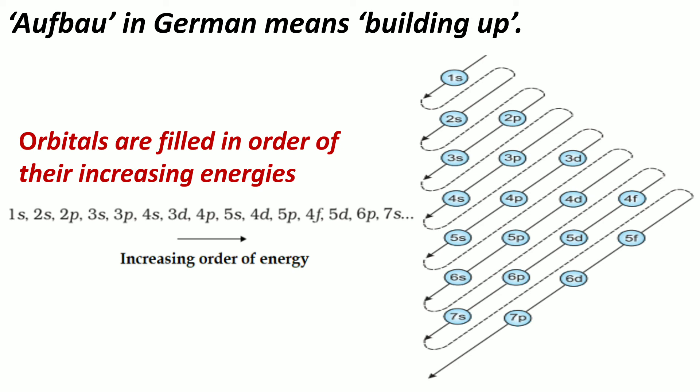In many cases, the orbitals are similar in energy and small changes in atomic structure may bring about a change in the order of filling. Even then, the above series is a useful guide to the building of the electronic structure of an atom provided that it is remembered that exceptions may occur.